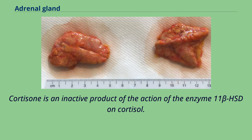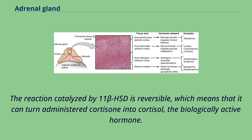Cortisone is an inactive product of the action of the enzyme 11-beta-HSD on cortisol. The reaction catalyzed by 11-beta-HSD is reversible, which means that it can turn administered cortisone into cortisol, the biologically active hormone.